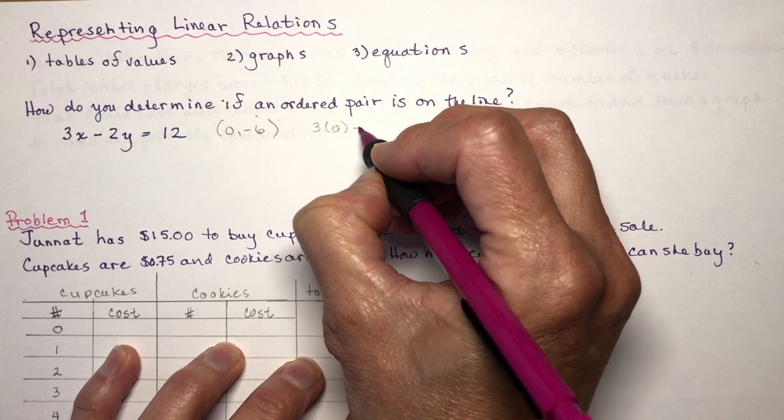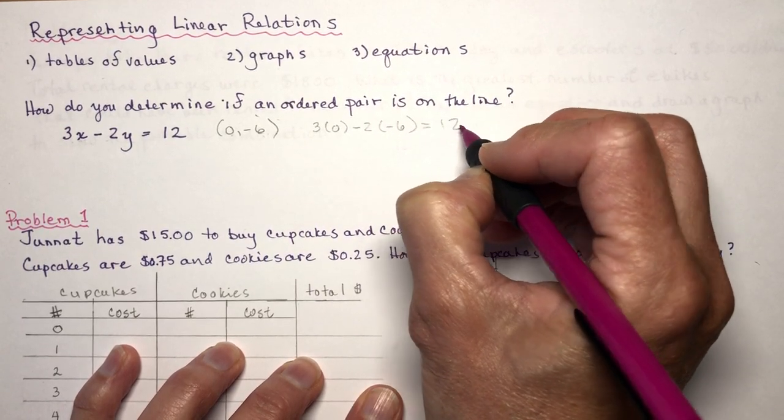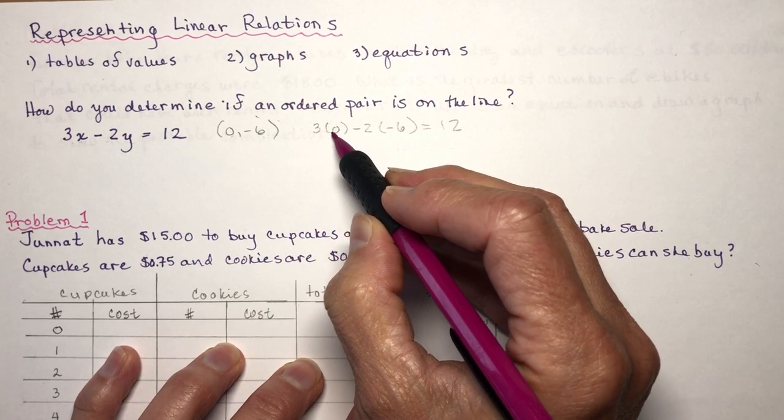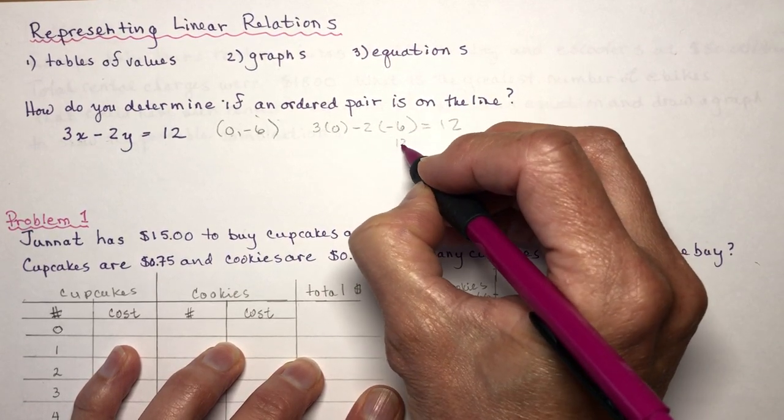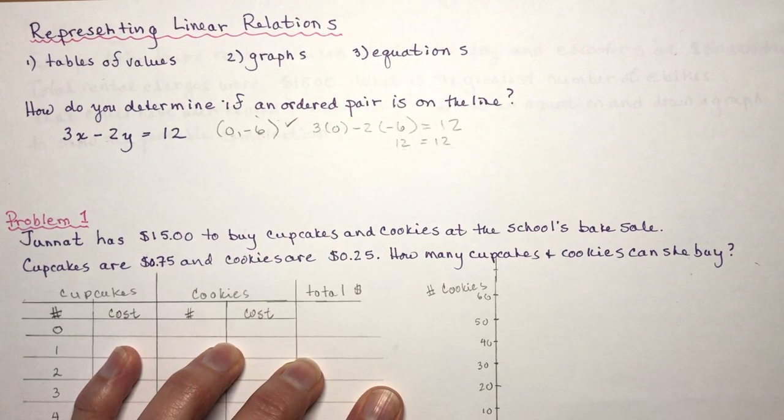You might hear your teacher say does this satisfy the equation. Satisfying it means if I plug in x is 0 and y is -6, will the left side equal the right side? So 3 times 0 minus 2 times -6 equals positive 12. This is 0 plus 12, so 12 equals 12, and therefore yes it is on the line.